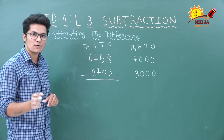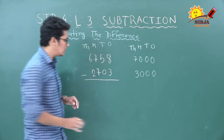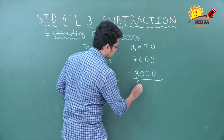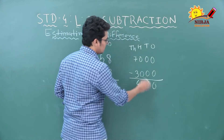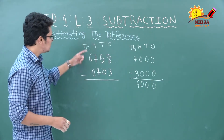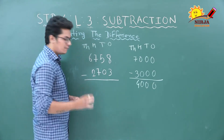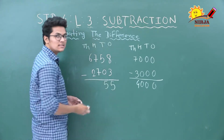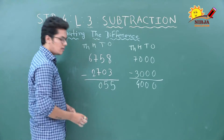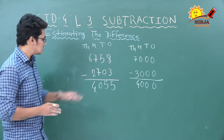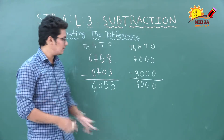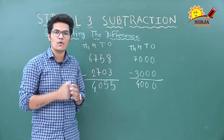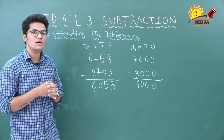Now let's find the actual difference. 8 minus 3 equals 5. 5 minus 0 equals 5. 7 minus 7 equals 0. 6 minus 2 equals 4. So the actual difference is 4,055. The estimated difference was 4,000. Estimation gives us an approximate idea of what the difference will be — that is the use of estimating in subtraction.